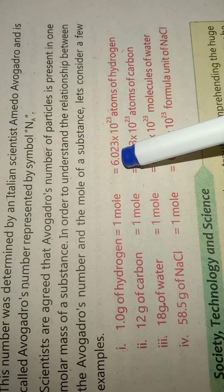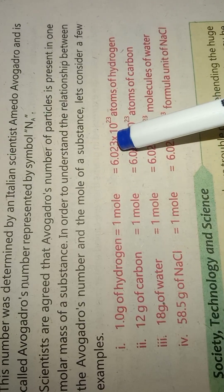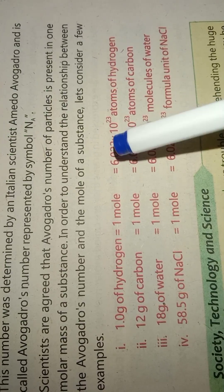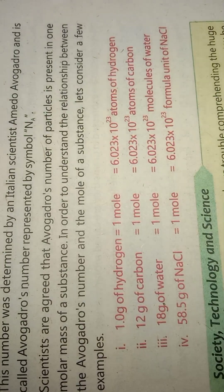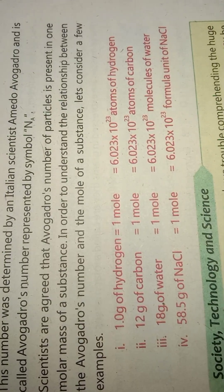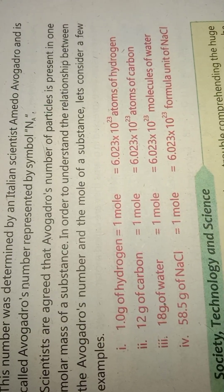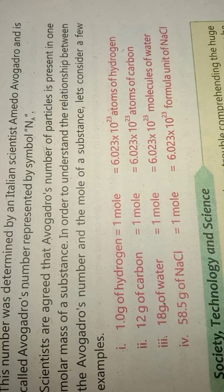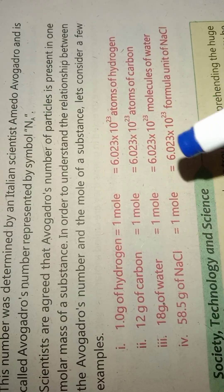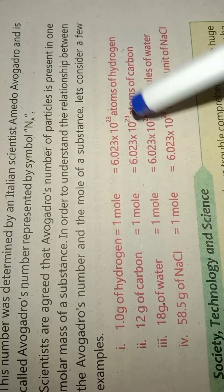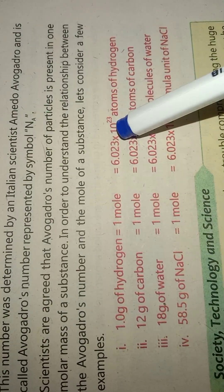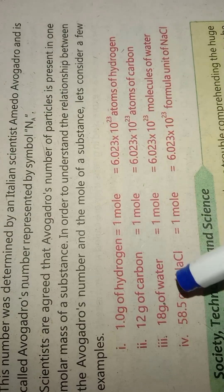The number of atoms of hydrogen is 6.023 multiplied by 10 to the power 23 atoms of hydrogen. This equals 1 mole of hydrogen.